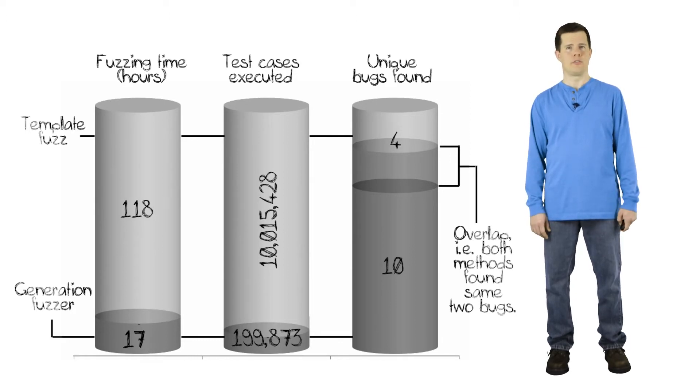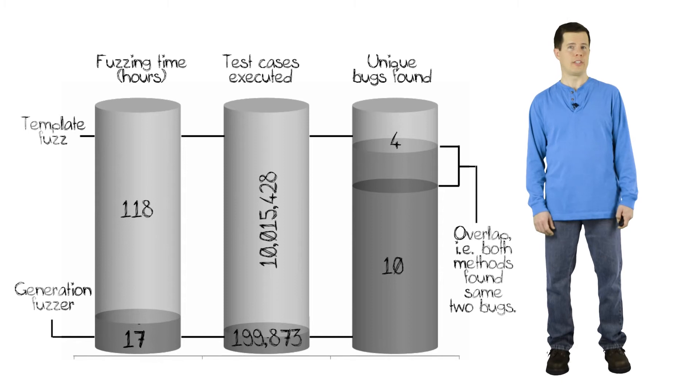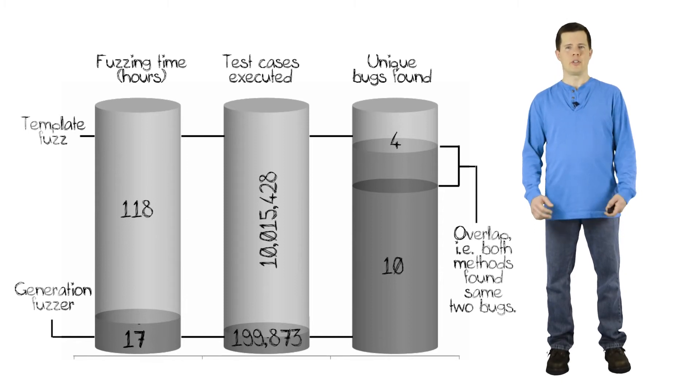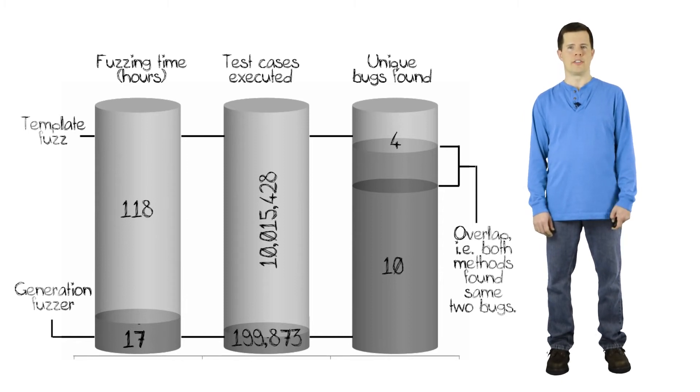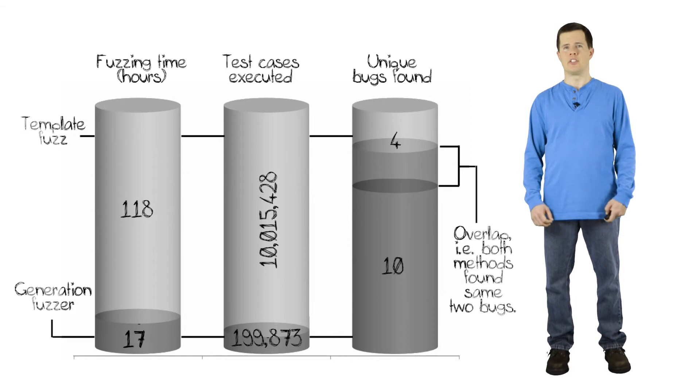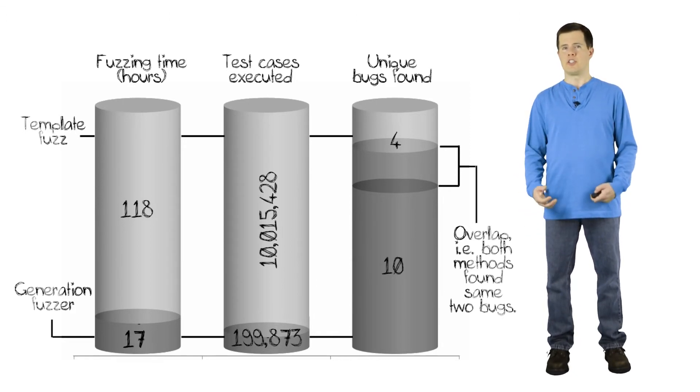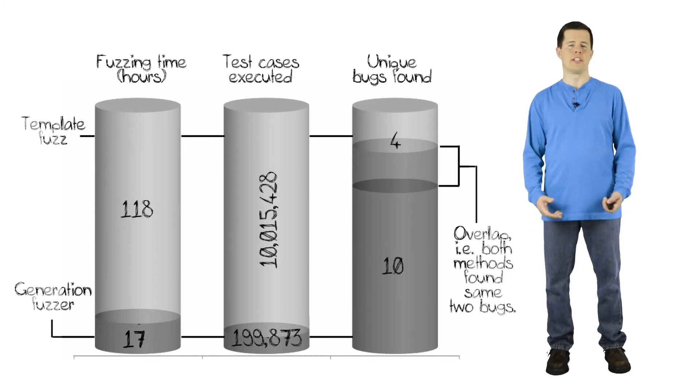The generational fuzzer, the fuzzer that knew the protocol in question, by contrast, ran for 17 hours, delivered 200,000 test cases, and located 10 vulnerabilities altogether. So this is not scientific. It's one set of test results, but it shows it's typical. And it shows you that the generational fuzzer gives you the best bang for your buck. So you can always expect a generational fuzzer to find you more vulnerabilities in less time than a template fuzzer.